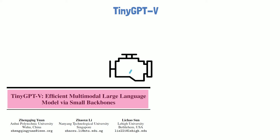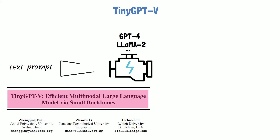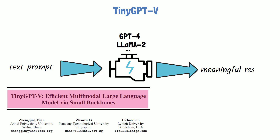In recent years we've seen tremendous progress with large language models such as GPT-4, LLaMA-2 and more, where we can feed the model with a prompt and get a meaningful answer. More recently, large language models have taken another step forward by being able to also understand images.